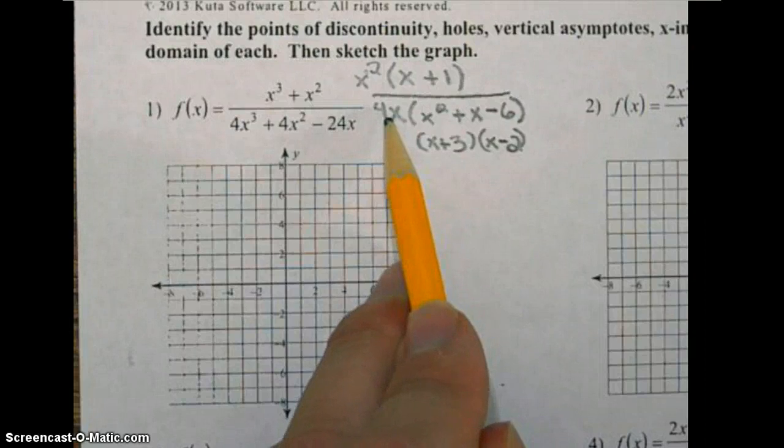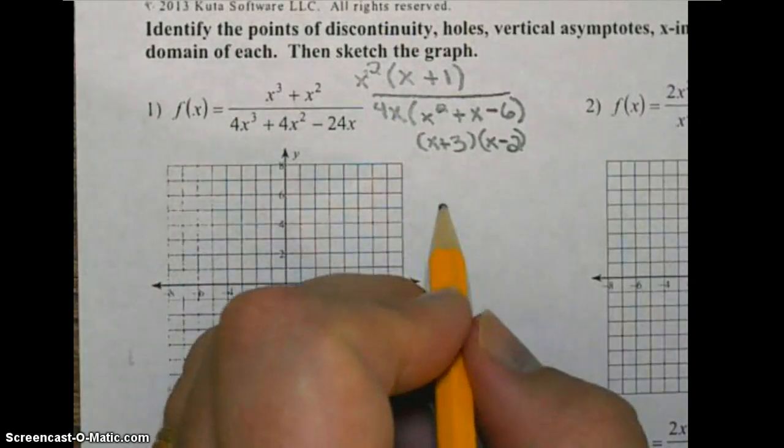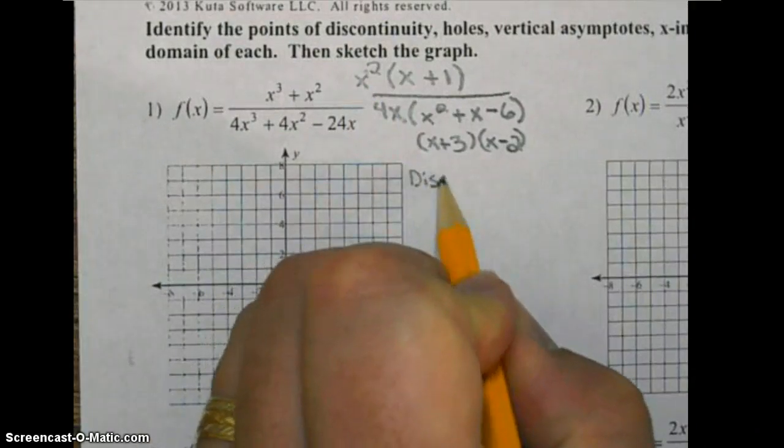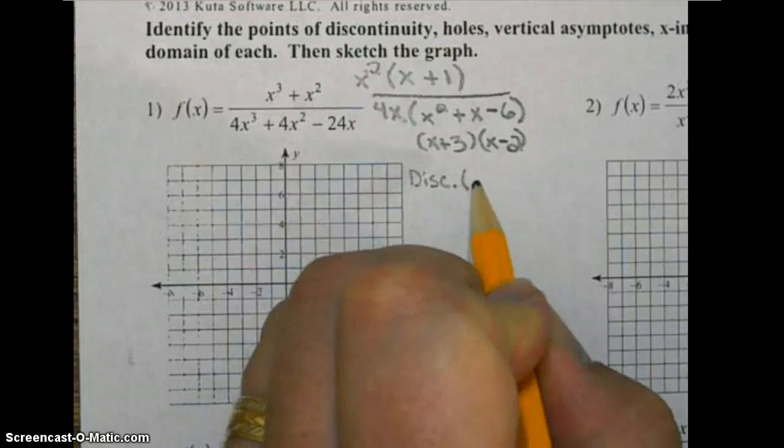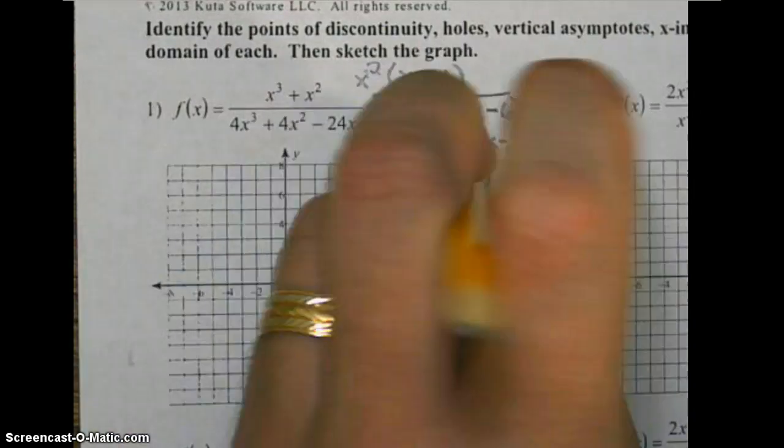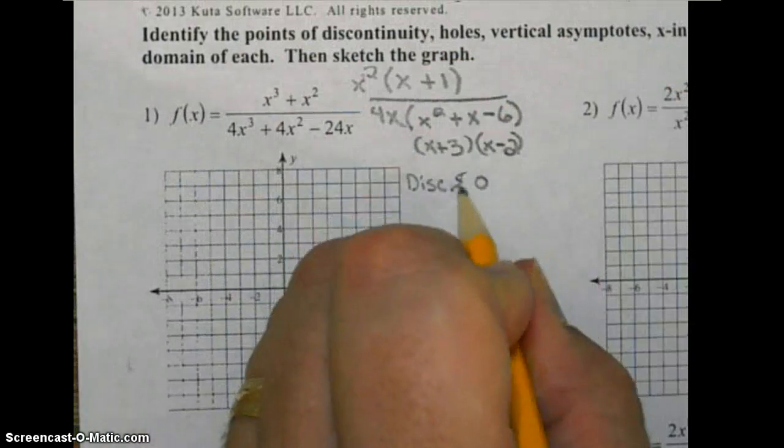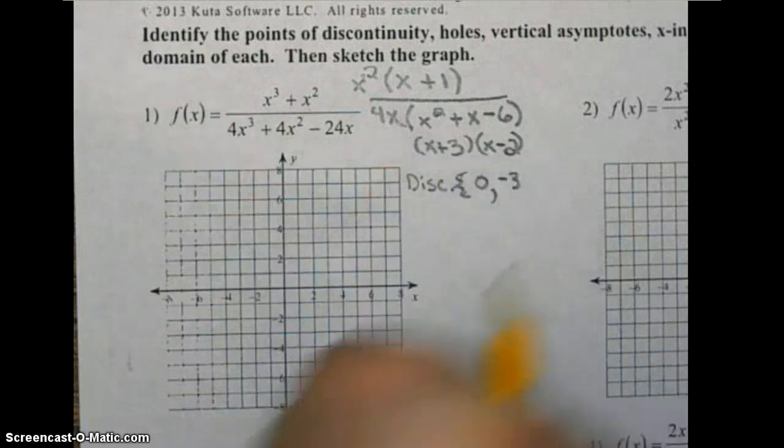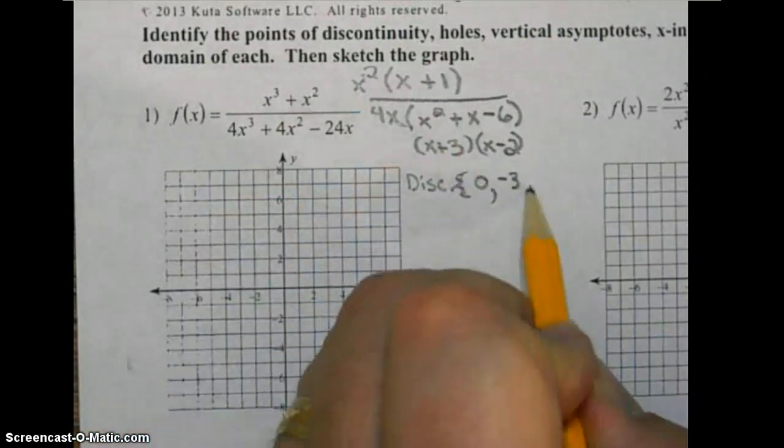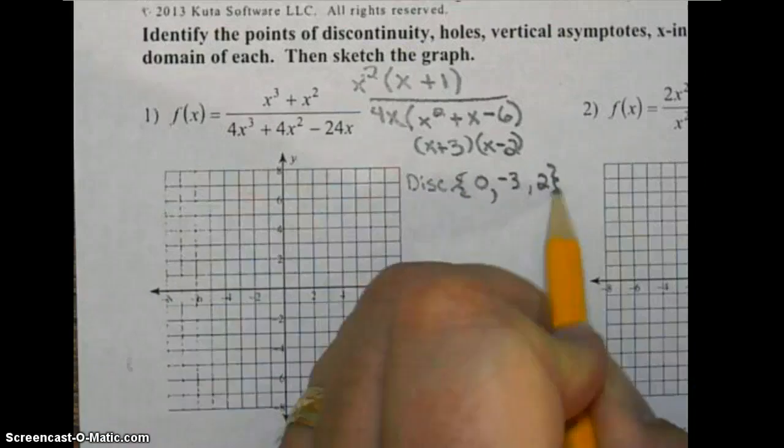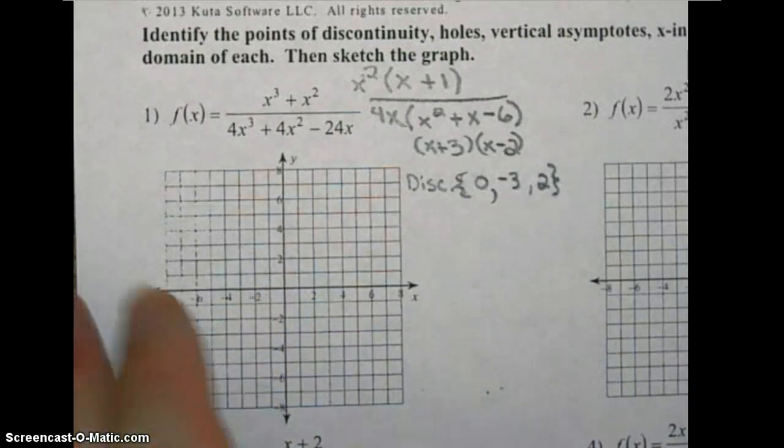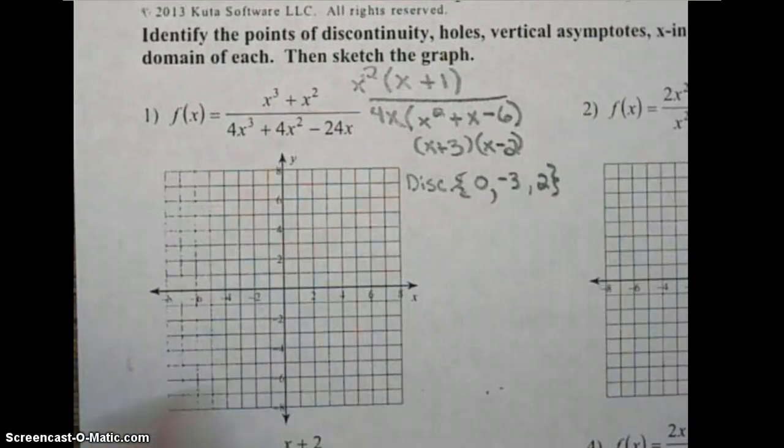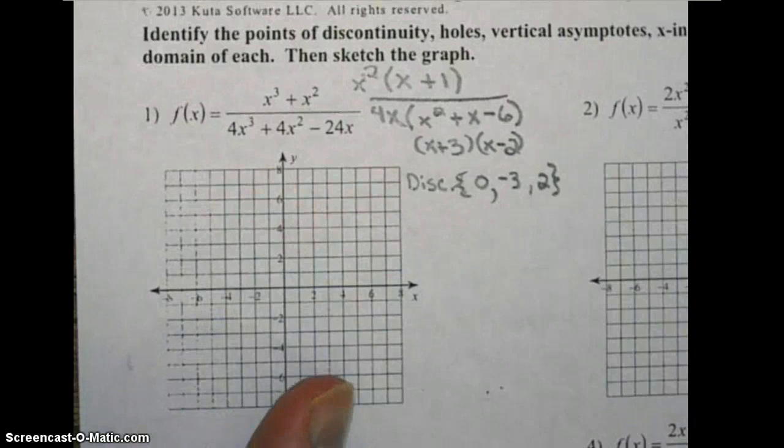The first point of discontinuity is going to be zero, so discontinuities: zero. Let's put a brace here. Setting the next one equal to zero, we have a discontinuity at negative 3, and then we have a discontinuity at 2. Remember, discontinuity means that the graph is broken up, the domain is broken up at these points. It's not a continuous graph.